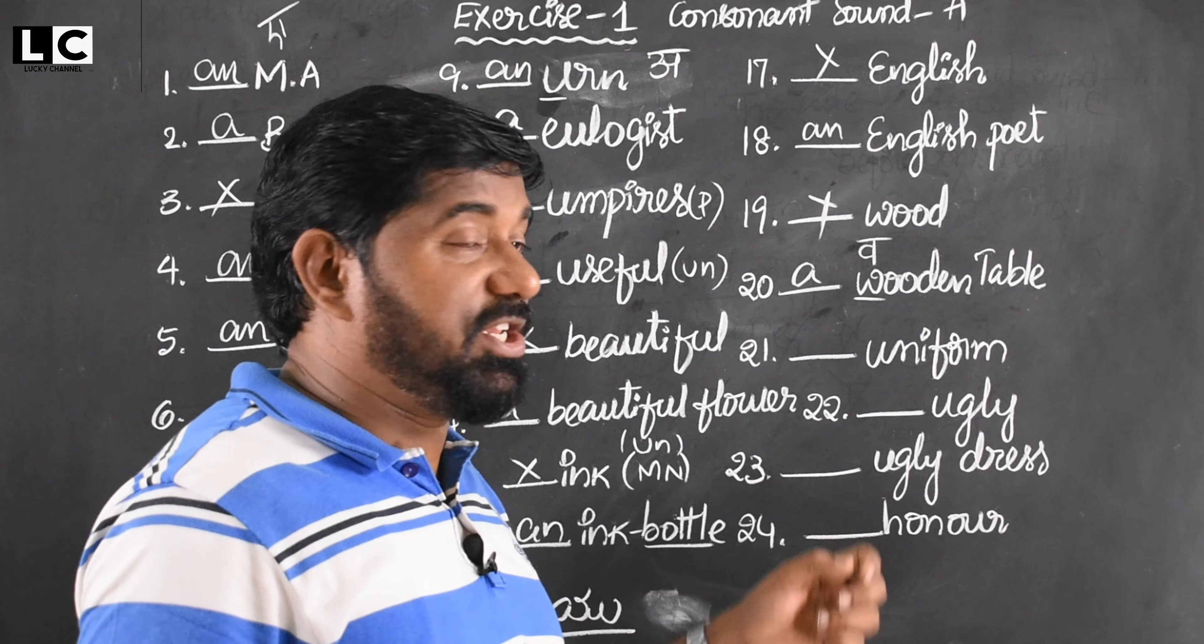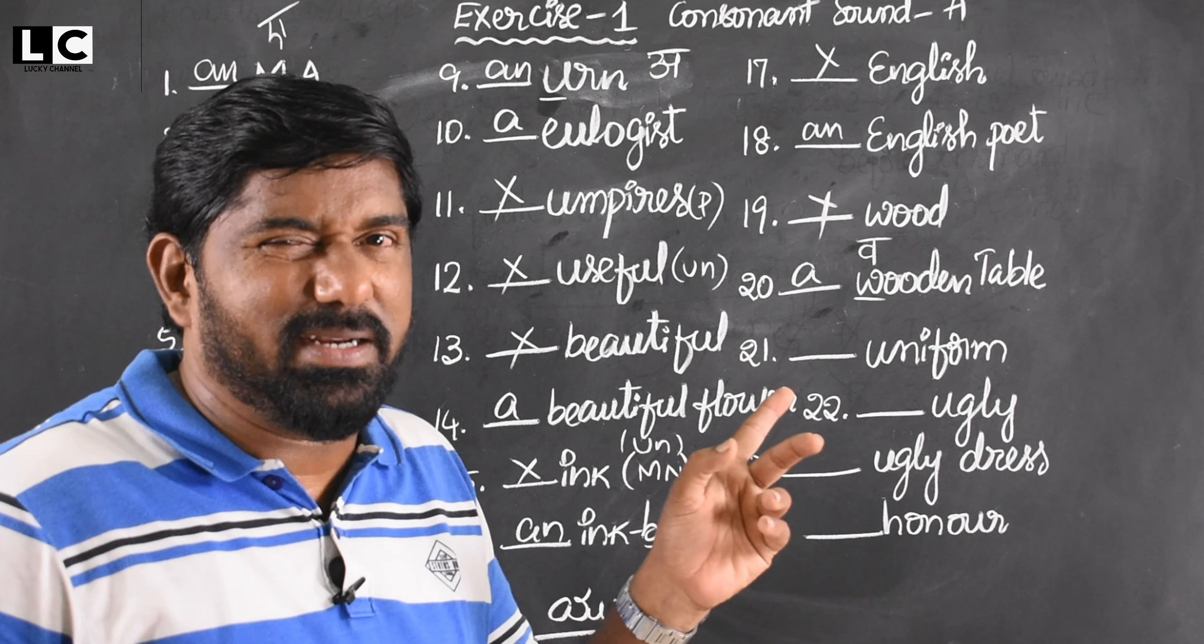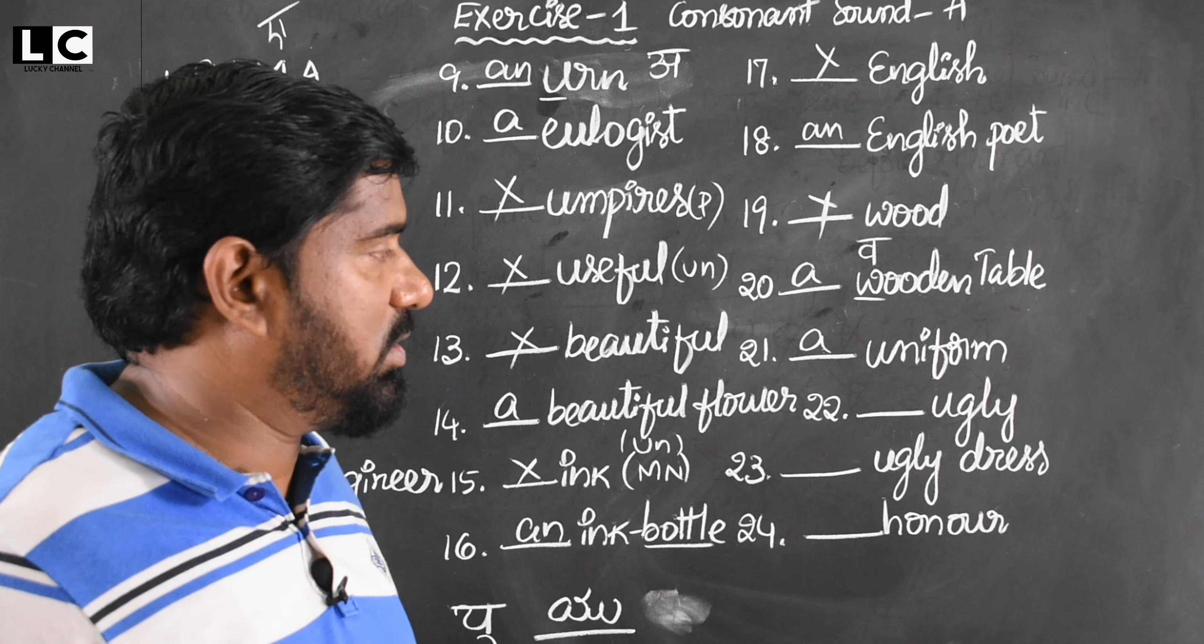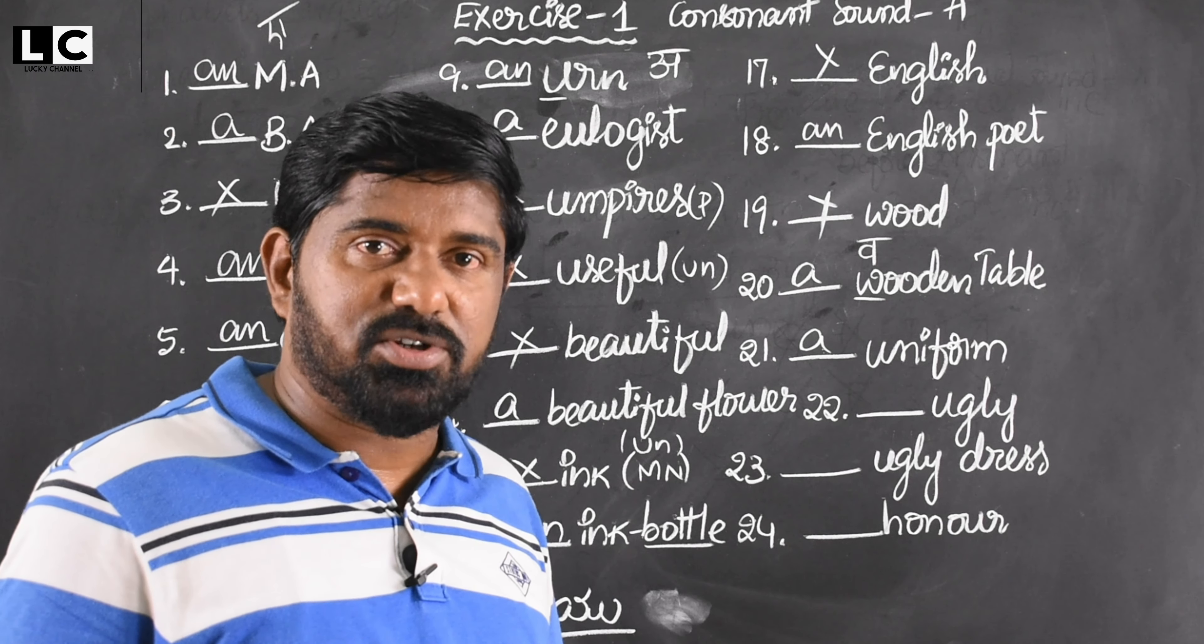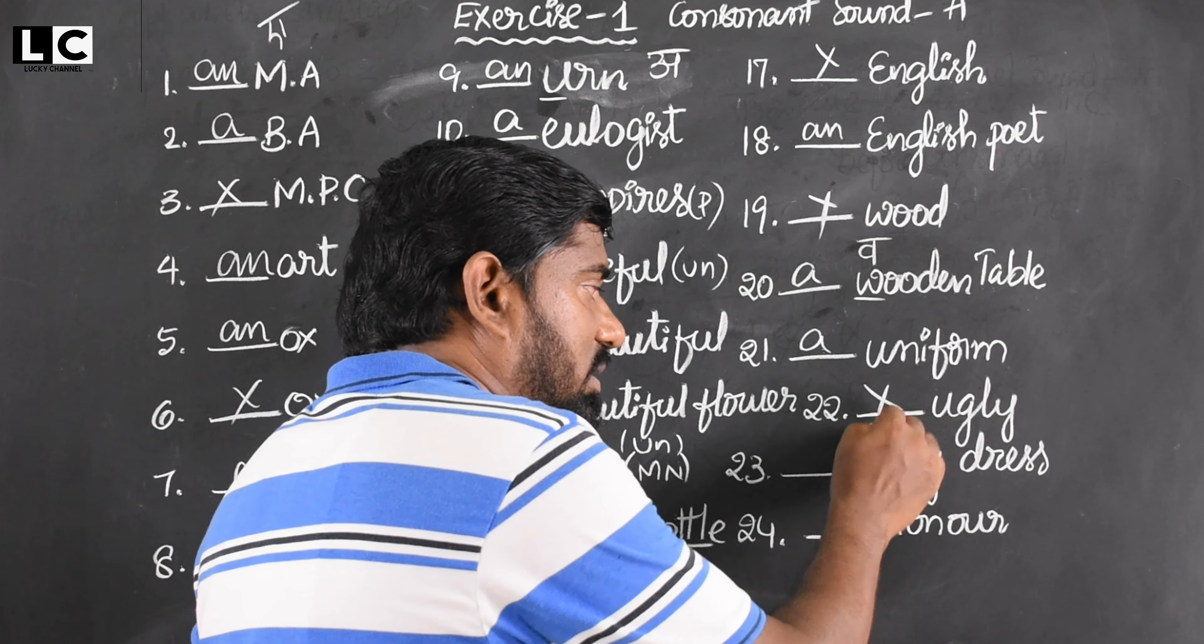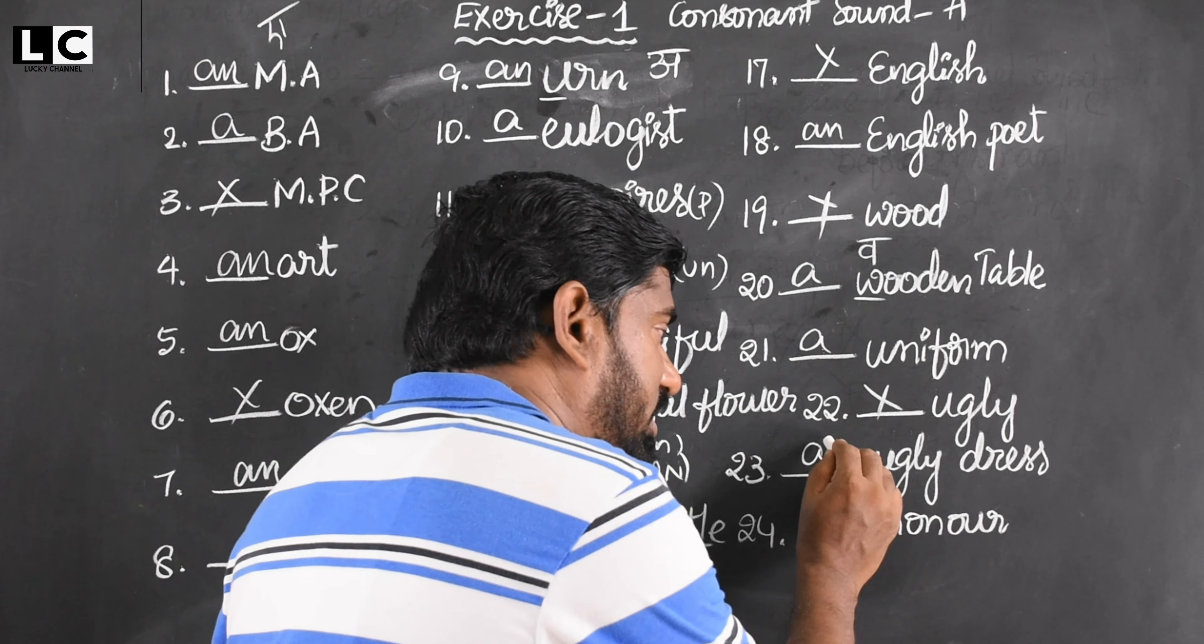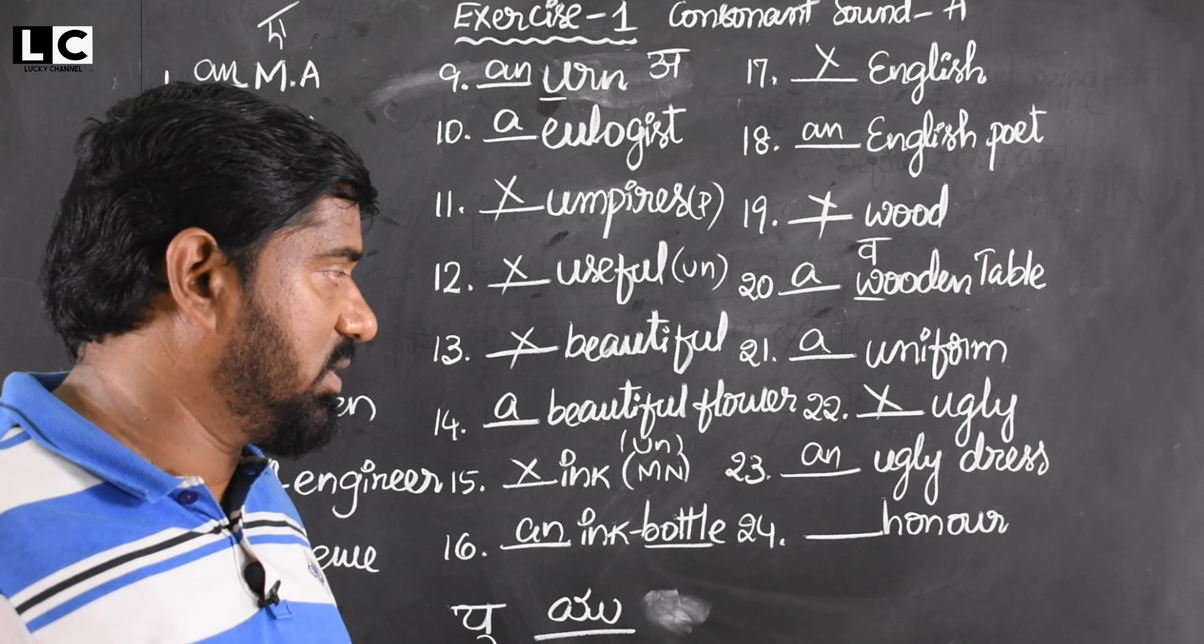Uniform - first sound is yoo, spelling doesn't matter, pronunciation matters. Yoo is consonant, so a uniform, it's countable. Ugly - it's an abstract noun, no article required. But ugly dress - it's countable, so an ugly dress, vowel sound.